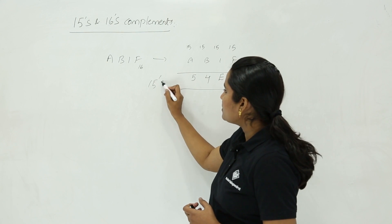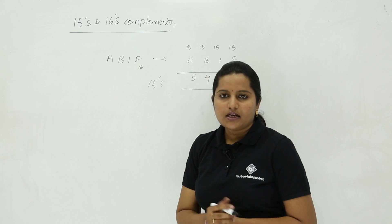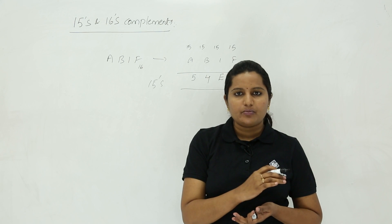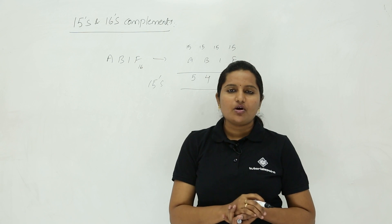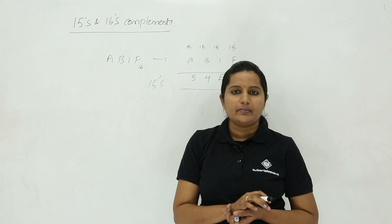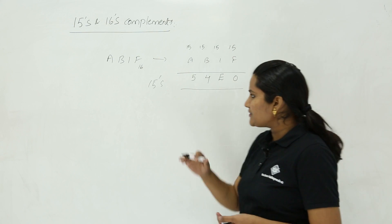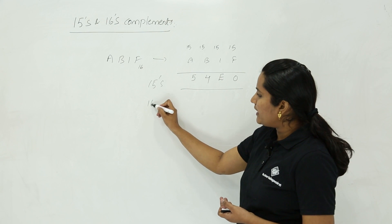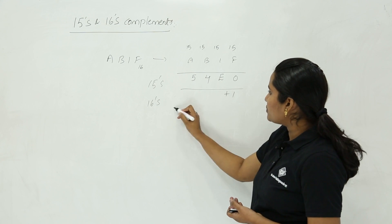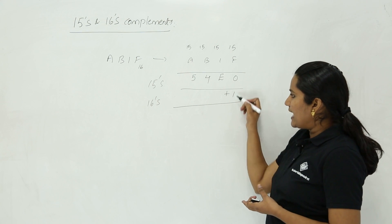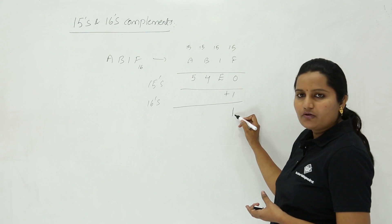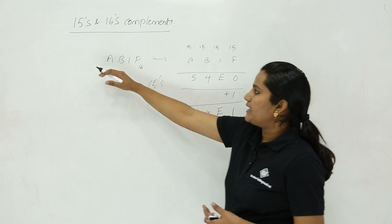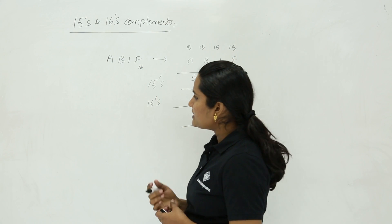This is the 15's complement of this hexadecimal number. Now coming to 16's complement. As we get the 2's complement by adding 1 to the 1's complement, in the same manner 16's complement can be found by adding 1 to the 15's complement of the hexadecimal number. So I am just adding 1 here: 0 plus 1 gives 1, and then E, 4, and 5. So this is the 16's complement of hexadecimal number AB1F.